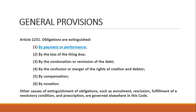Other causes of extinguishment of obligations such as annulment, rescission, fulfillment of a resolutory condition, and prescription are governed elsewhere in this code. The first six enumerated are called the primary modes of extinguishing obligations, and the second paragraph refers to the secondary modes of extinguishing obligations.